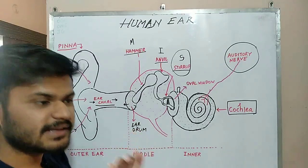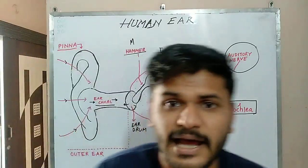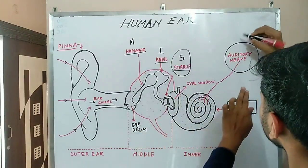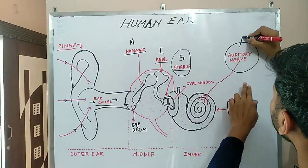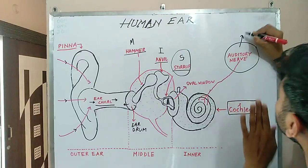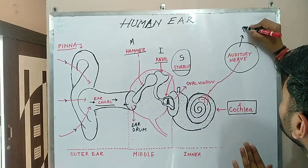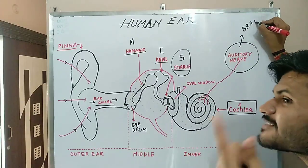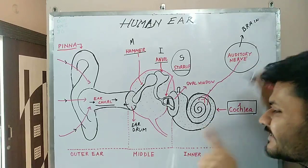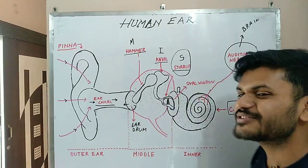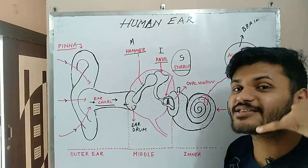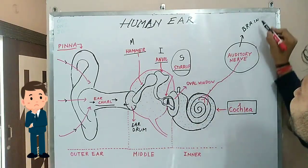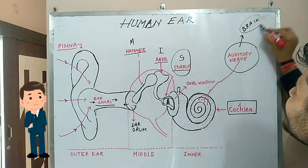These electrical impulses are transferred via the auditory nerve to our human brain, where we can understand and identify the sound — for example, recognizing whose voice it is on a phone call. The brain processes all of this recognition.